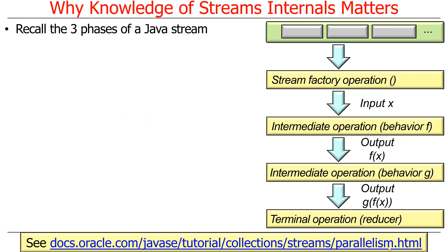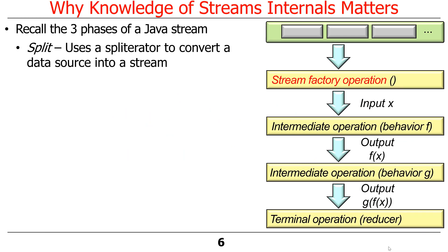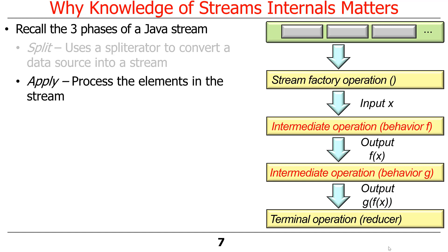To get an understanding of that discussion, let's recall the three phases of a Java stream. The first phase is the split phase, where a spliterator is used to convert a data source into a stream — we've talked about spliterators earlier and will cover them more in this section. The next phase is the apply phase, where the various elements in a stream are processed by intermediate operations like map, filter, map to int, and so on.